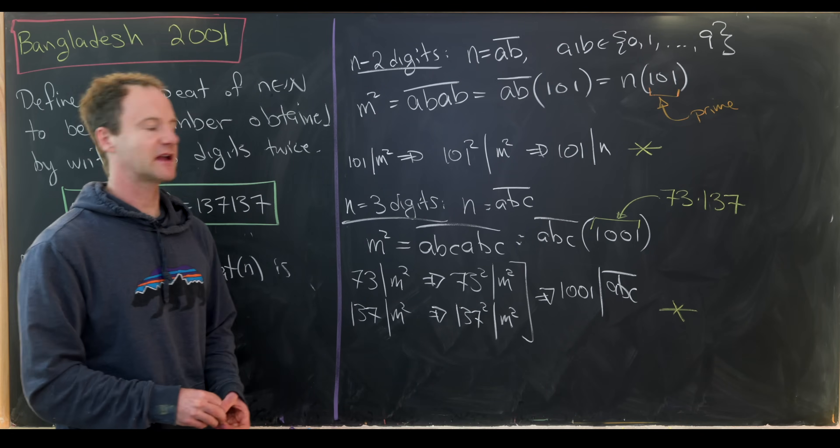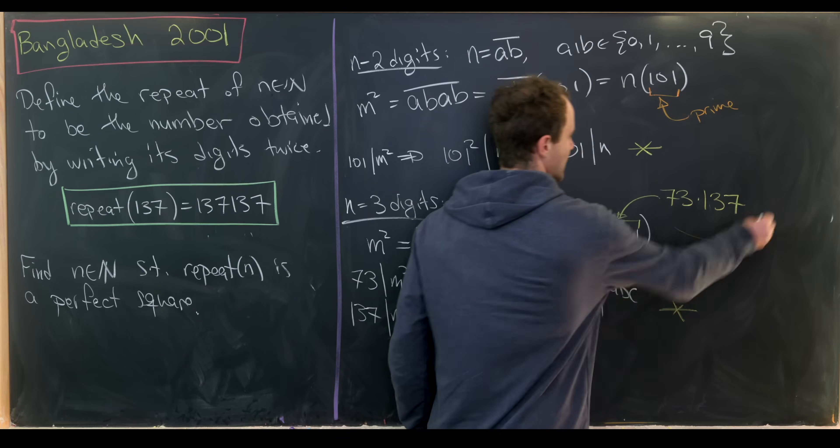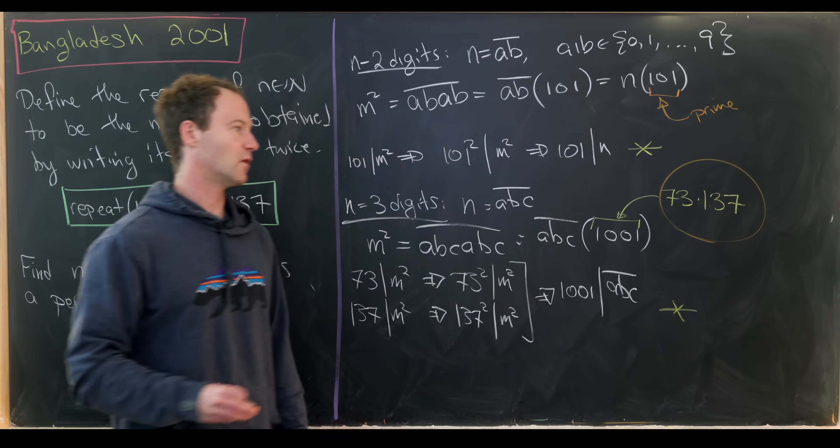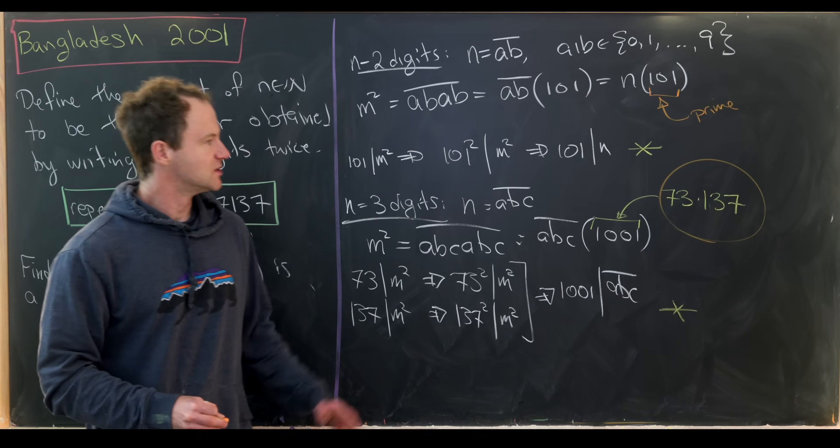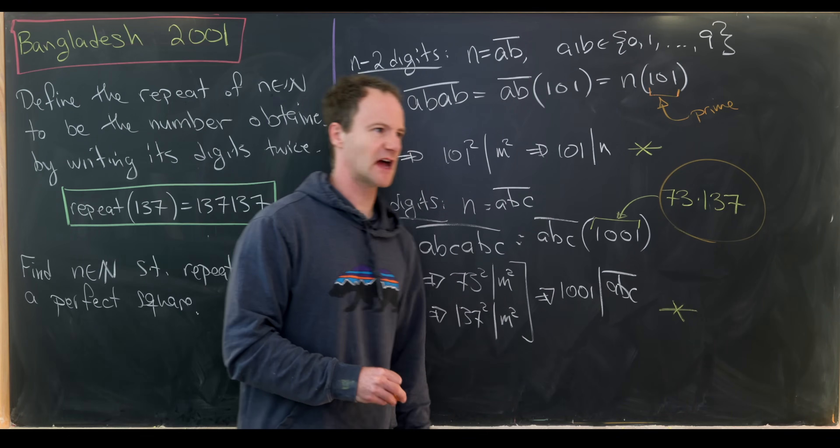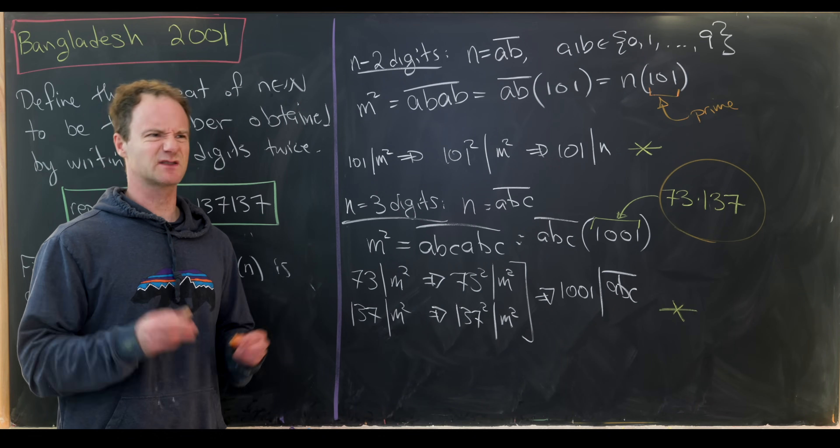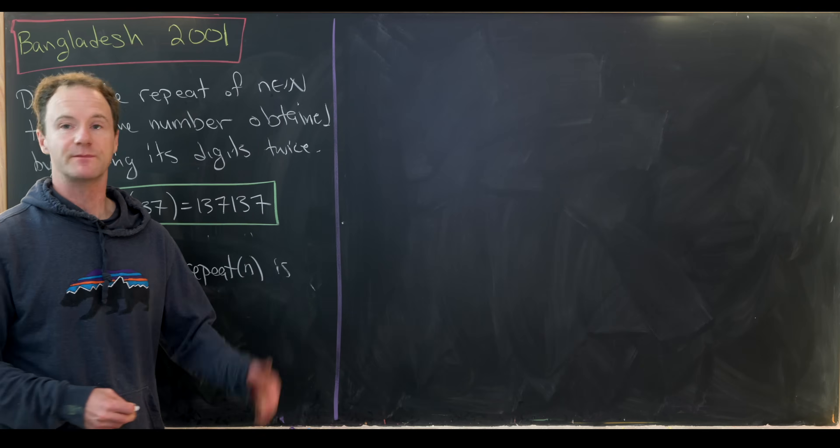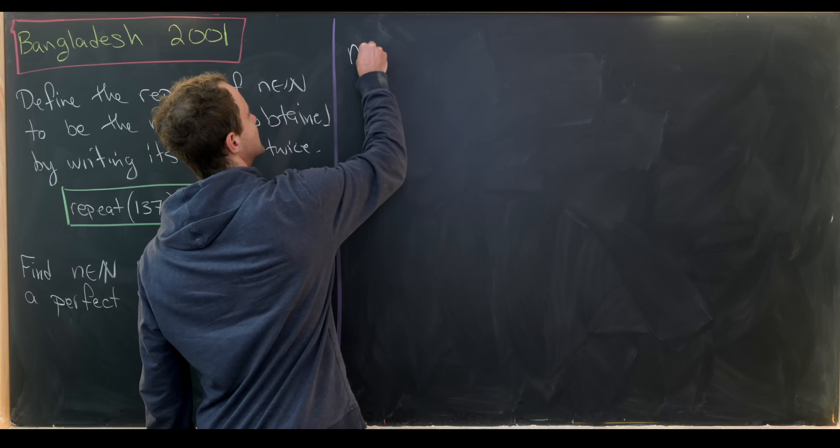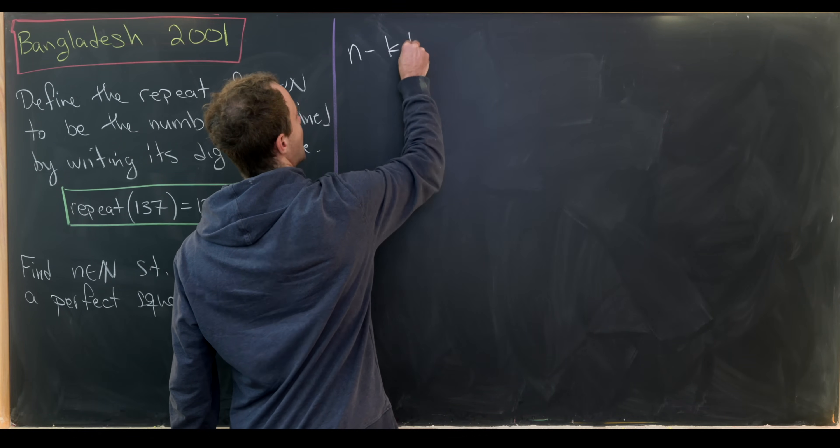That being said, something that gives us a glimmer of hope here is the fact that 1001 is not a prime. So perhaps if this factors out with a small enough prime, we would be okay. So now let's look at this more in general. So working more generally, let's say that n has k digits.